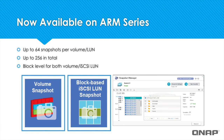On ARM processor QNAPs, you'll be able to take up to 64 snapshots per volume or LUN and up to 256 snapshots in total. And QNAP snapshots are performed on the block level, giving the best performance.